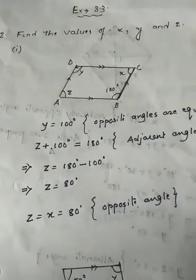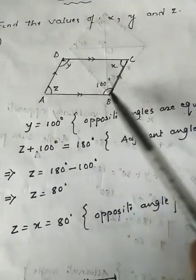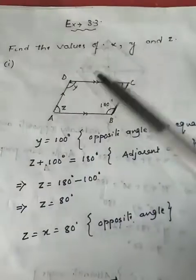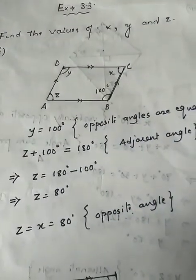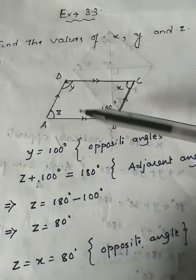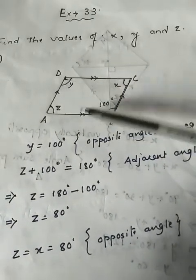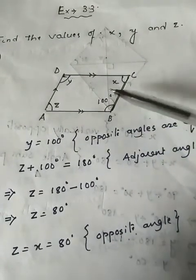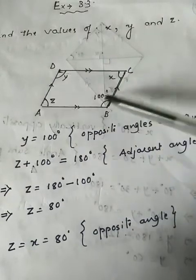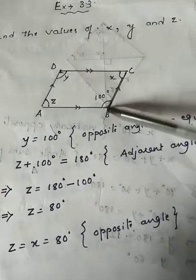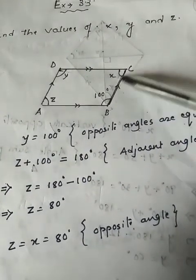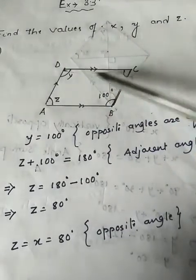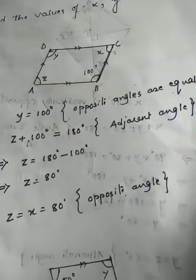All the figures we'll discuss are parallelograms. As a quick introduction: in a parallelogram, opposite sides are parallel and equal, opposite angles are equal, and adjacent angles sum to 180 degrees. These are the adjacent angle pairs we need to remember as we work through these figures.